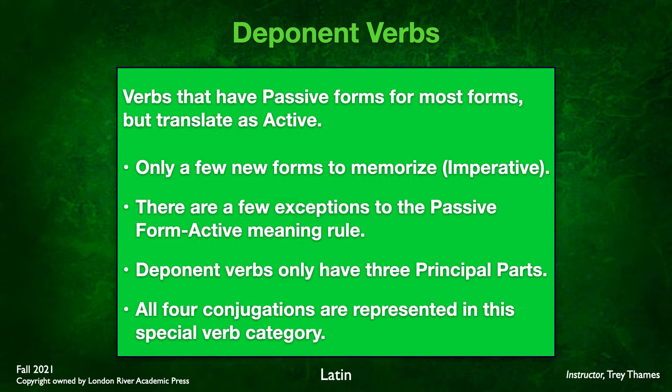Keep in mind also that deponent verbs only have three principal parts. Basically, they're missing that third principal part that we would use to form the active voice perfect system. Since there are no active voice forms, we don't need that third principal part. And keep in mind that all four conjugations are represented in this special category of verbs — first, second, third, and fourth conjugations.